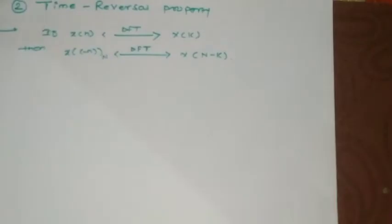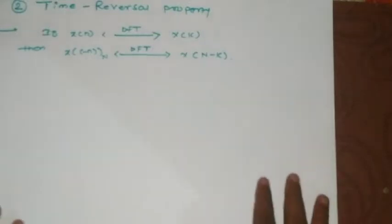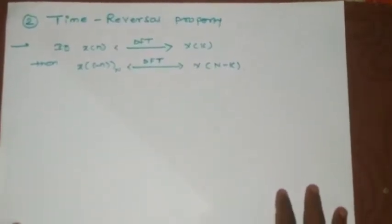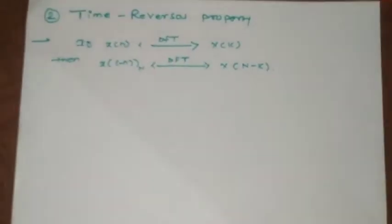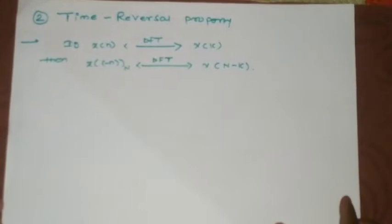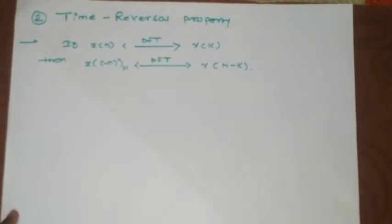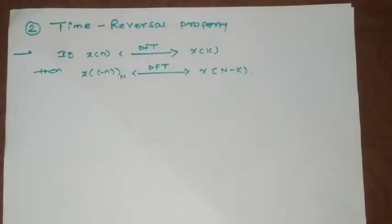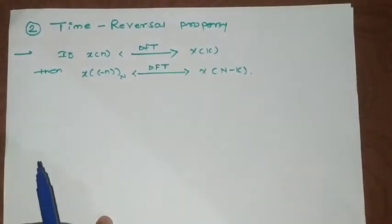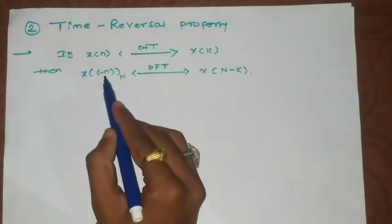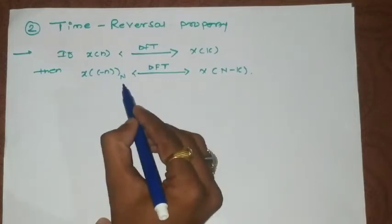The time reversal property, as the name indicates, involves reversing the sequence in the time domain. The statement is: if x(n) has DFT X(k), then the time-reversed sequence x(-n) modulo N has a corresponding DFT. Here an important term arises — 'modulo N' — because the sequence is reversed as -n, written as base N.